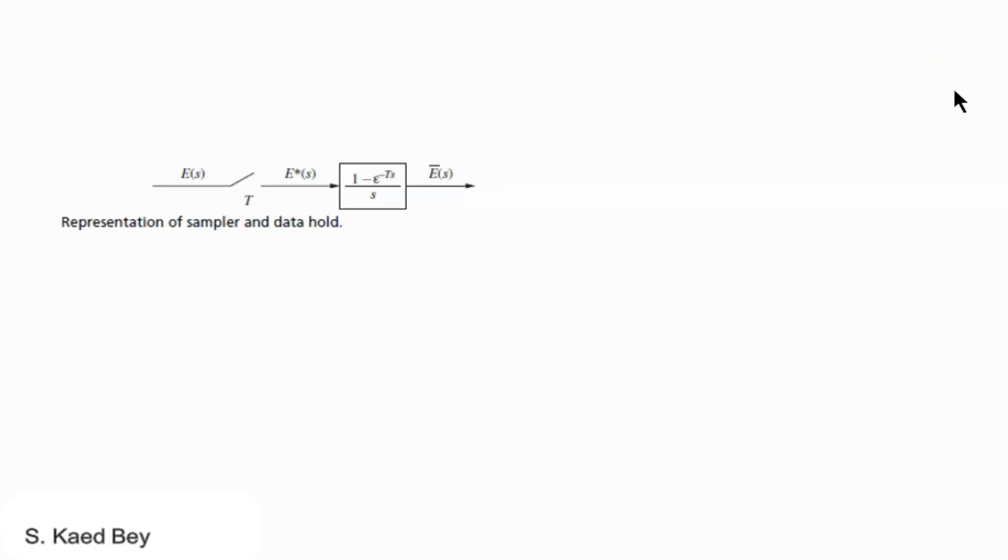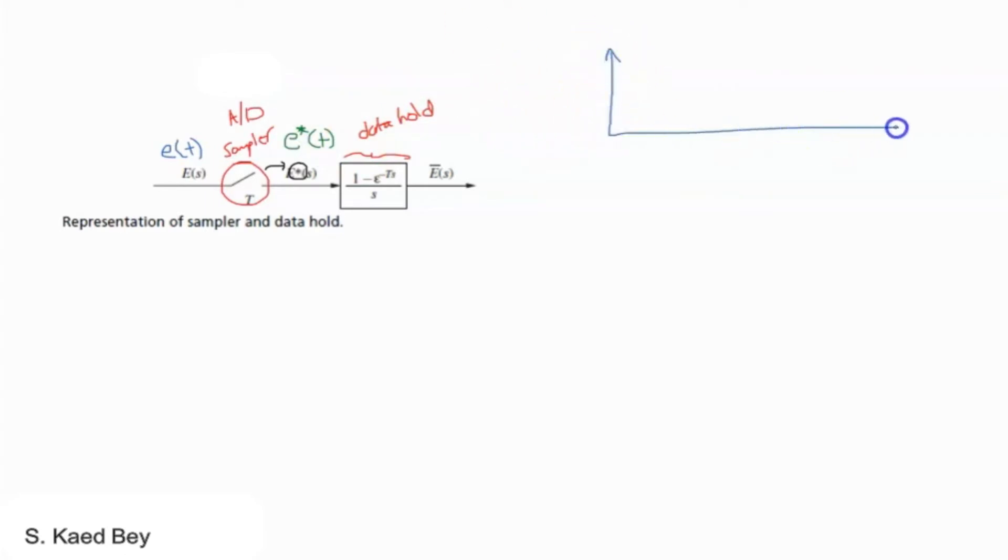This is the representation of a sampler and data hold. The sampler could represent the analog-to-digital converter in your digital computer, and this is what we call the data hold. Note that the start function is always occurring after the sampler. If I have some function of t, then the information after the sampler will be e-star of t. Assume e of t looks like this, for example.